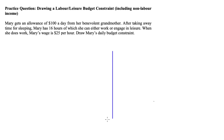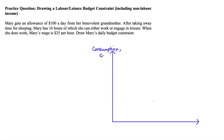Now with these sorts of questions, when we draw out our axes, it's always going to be our level of consumption C on the vertical axis, and we'll have the level of leisure on the horizontal axis, which we call big L.